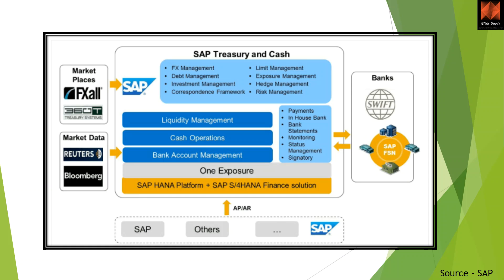When it comes to bank connectivity, you have your main payments, in-house cash, bank statements coming in, and monitoring of all bank payments. You also have the status of each payment plus the signatory — who is signing what. Then you connect with SWIFT to and fro, plus SAP FSM. On top of that there is treasury and cash, which takes care of the overall treasury function. I will not get into details — this is a completely separate module within SAP treasury management.